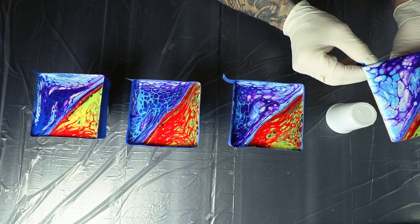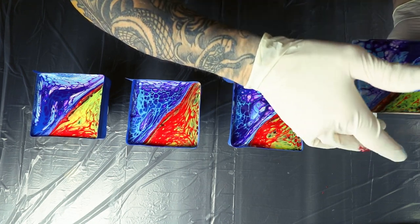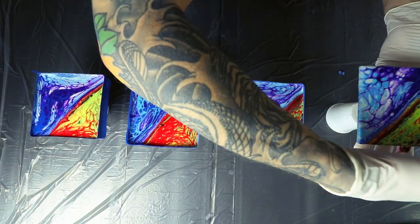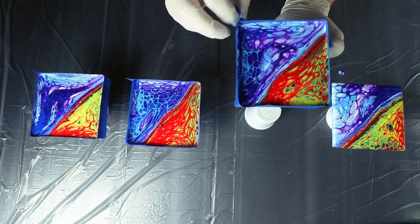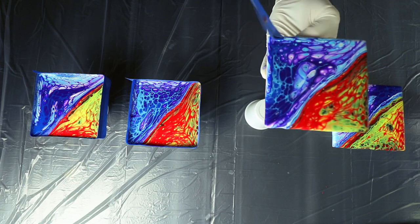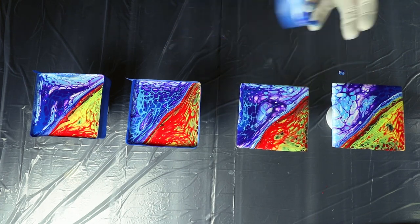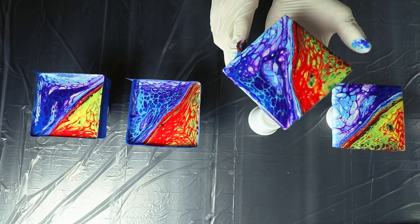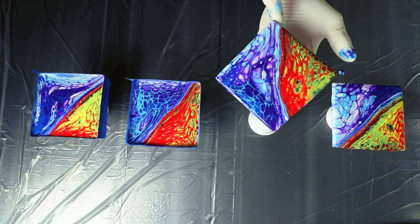Okay, so now I'm going around and breaking up the surface tension along the sides of the coasters. Because if I don't and I let it flow freely the way it's going to flow, there's going to be bald patches where there's no paint covering. So just to alleviate that and allow the paint to flow over the sides evenly, I have to make sure it's completely covered on the sides.